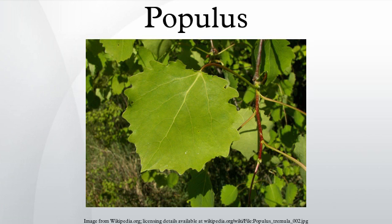Populus section Leucoides: Necklace Poplars or Big Leaf Poplars. Eastern North America, Eastern Asia, warm temperate. Includes Populus heterophylla (Swamp Cottonwood), Populus lasiocarpa (Chinese Necklace Poplar), and Populus wilsonii (Wilson's Poplar).